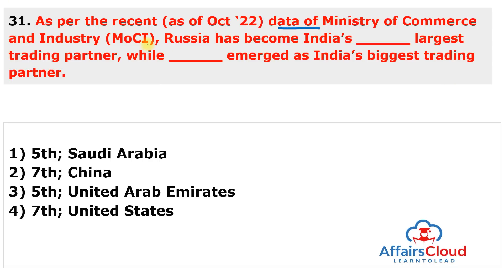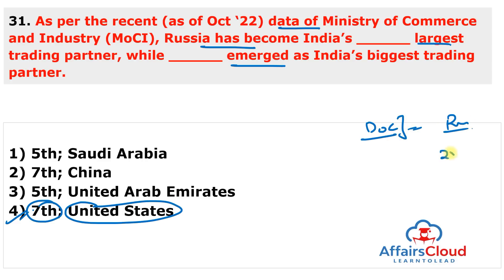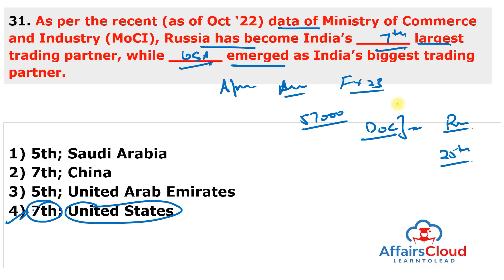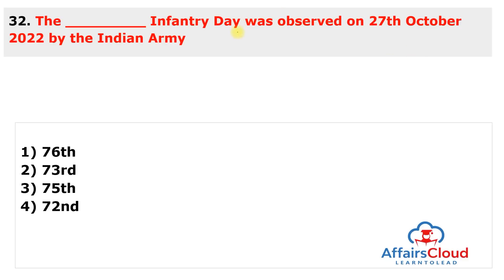Next question: as per recent data from the Ministry of Commerce and Industry, Russia became India's how-manyth largest trading partner, while which country emerged as India's biggest trading partner? The USA is number one and Russia moved to 7th. According to the Department of Commerce, Russia moved from 25th place in 2021 to become India's 7th largest trading partner. The United States emerged as India's biggest trading partner from April to August of FY23 with a trade volume of almost $57,000 million. China is second, UAE is third, Saudi Arabia fourth, Iraq fifth, and Indonesia sixth.